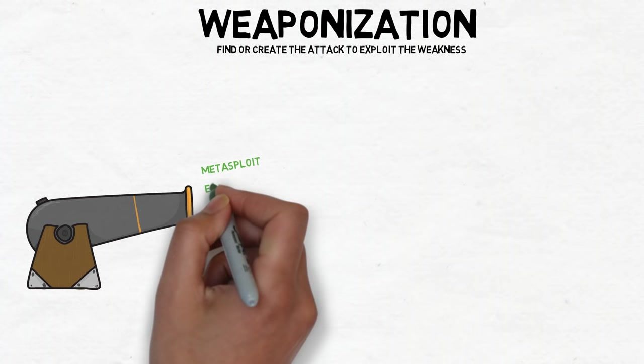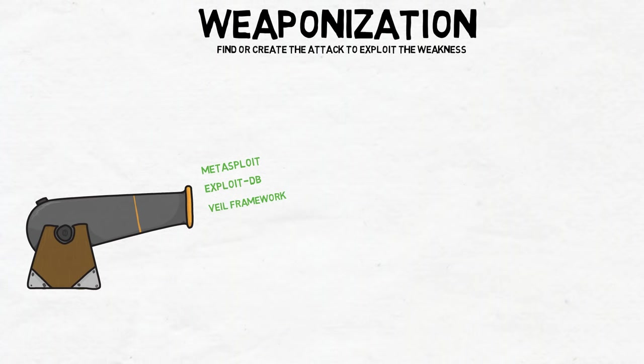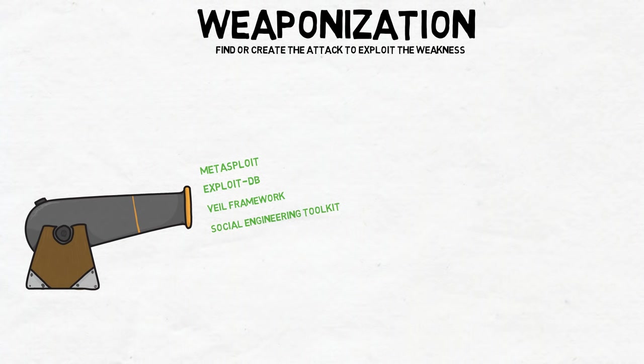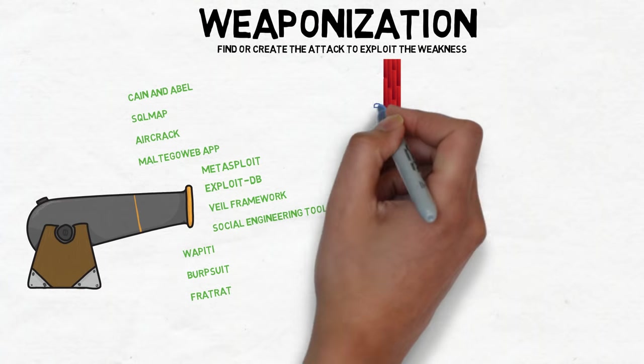Some commonly used weapons during this phase are tools like Metasploit or ExploitDB. These are repositories for known exploits. The Veal Framework, which is commonly used to generate evasion code for malware. Social Engineering Toolkit, if they decided that they will deliver the malware through a social engineering campaign. And of course, many others.